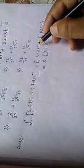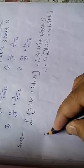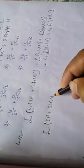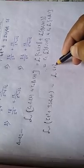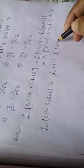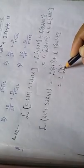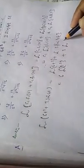So in our case, the Laplace transform of 6t³ + 3sin(4t) will be the Laplace transform of 6t³ plus the Laplace transform of 3sin(4t). So 6 will get out: Laplace transform of t³, plus 3 into Laplace transform of sin(4t).